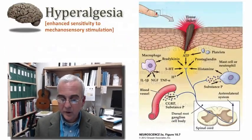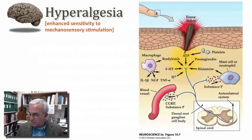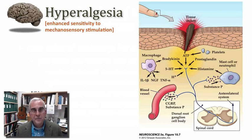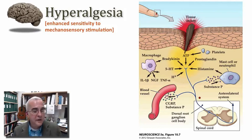Let's move on and consider how nociception is processed and modulated by both local and neural factors. Let's consider the phenomenon of hyperalgesia, which refers to inflammatory pain — a condition of enhanced sensitivity to mechanosensory stimulation following the onset of injury and the development of an immune and inflammatory response in the tissue. Hyperalgesia is due to peripheral sensitization of our nociceptors, largely due to the action of paracrine mediators of inflammation.